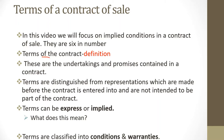Before we go into that discussion, I want us to understand what terms of a contract mean and distinguish them from representations. When we talk about terms of a contract, these are undertakings and promises contained in a contract — party A is to do certain things and party B is to do certain things. Representations, on the other hand, are statements made before a contract is entered into and are not intended to form part of a contract.